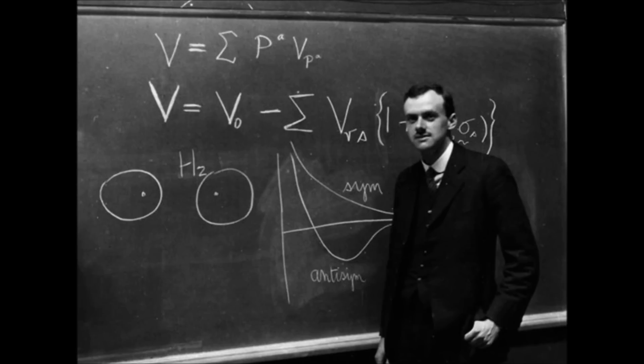You might use some atomic unit of time instead of years. Years is quite artificial, depending on our solar system. Take an atomic unit of time, express the age of the universe in this atomic unit. You again get a number about 10 to the 39, roughly the same as the previous number.